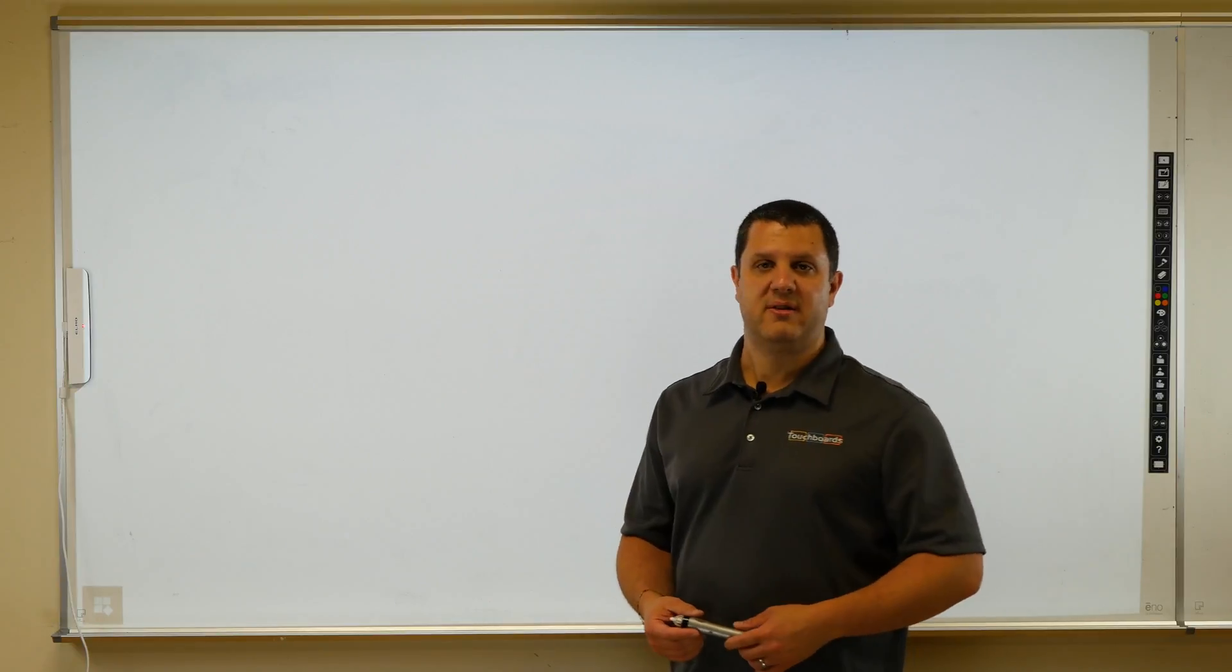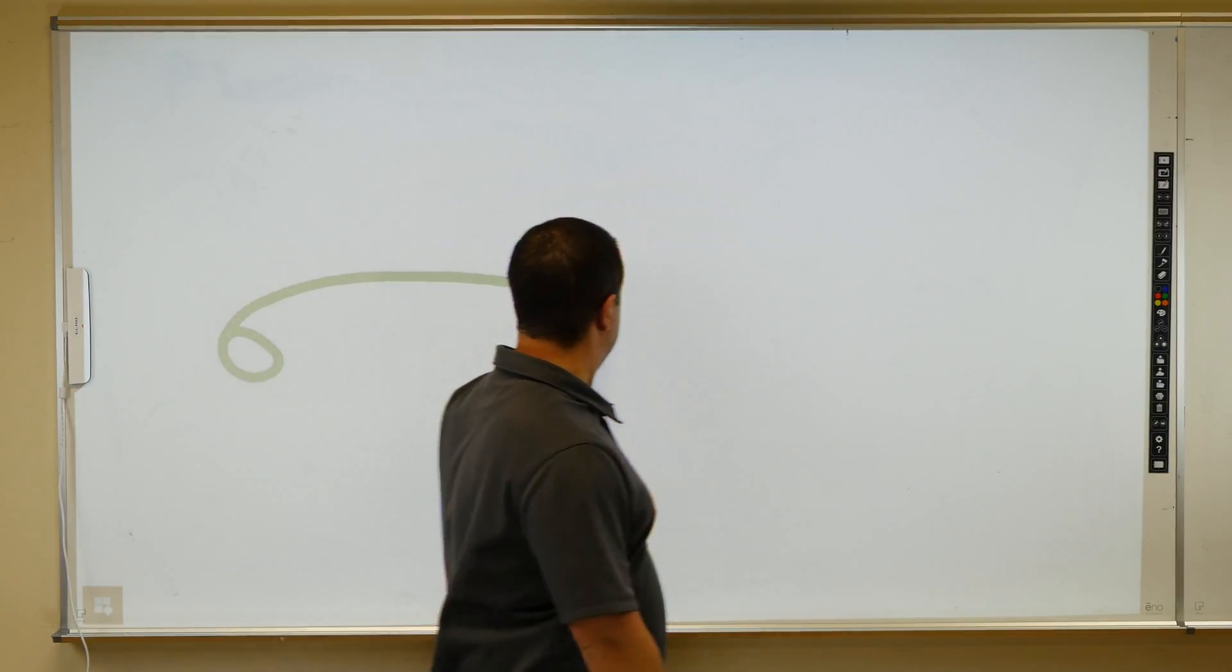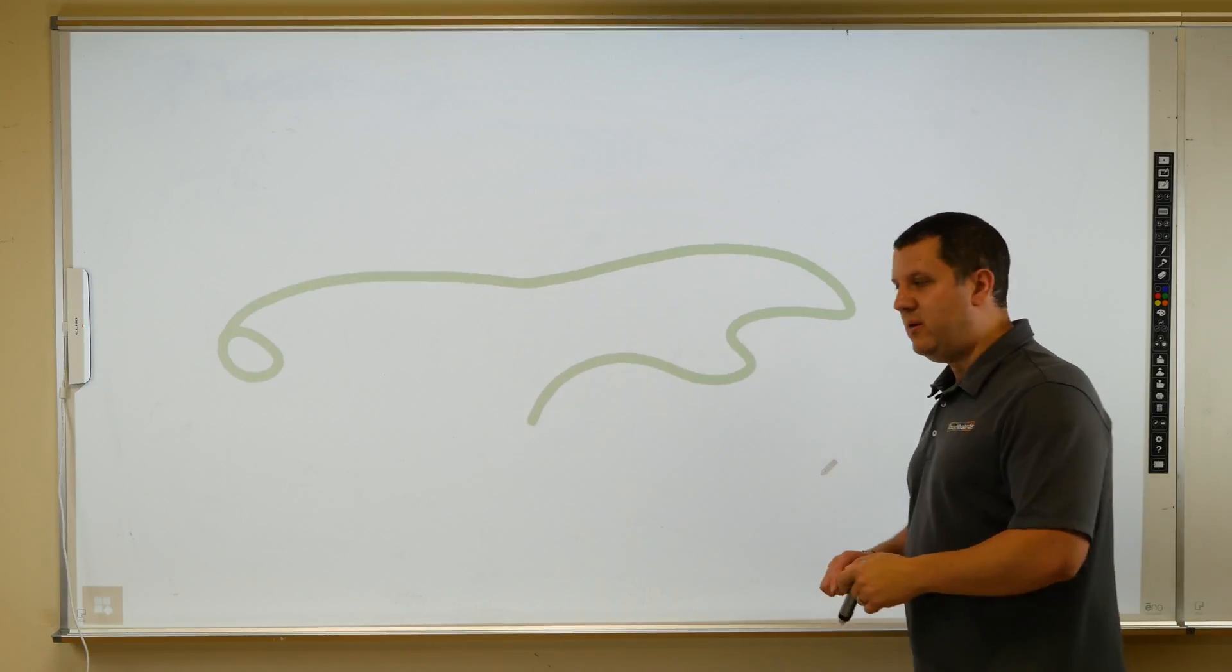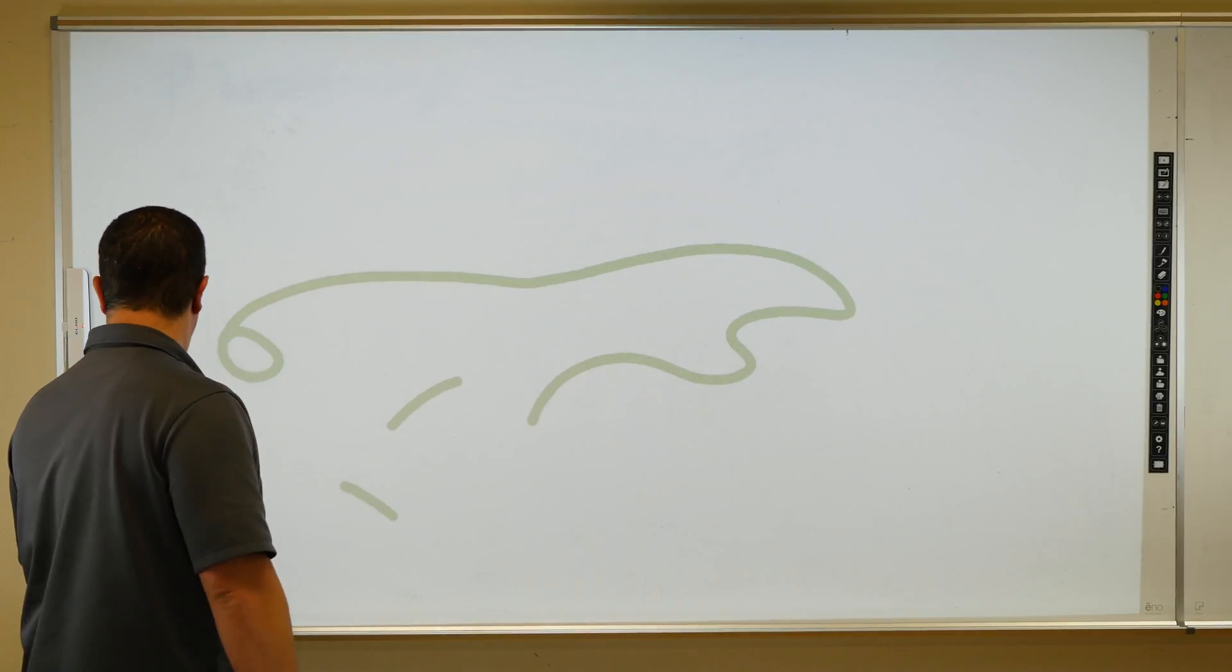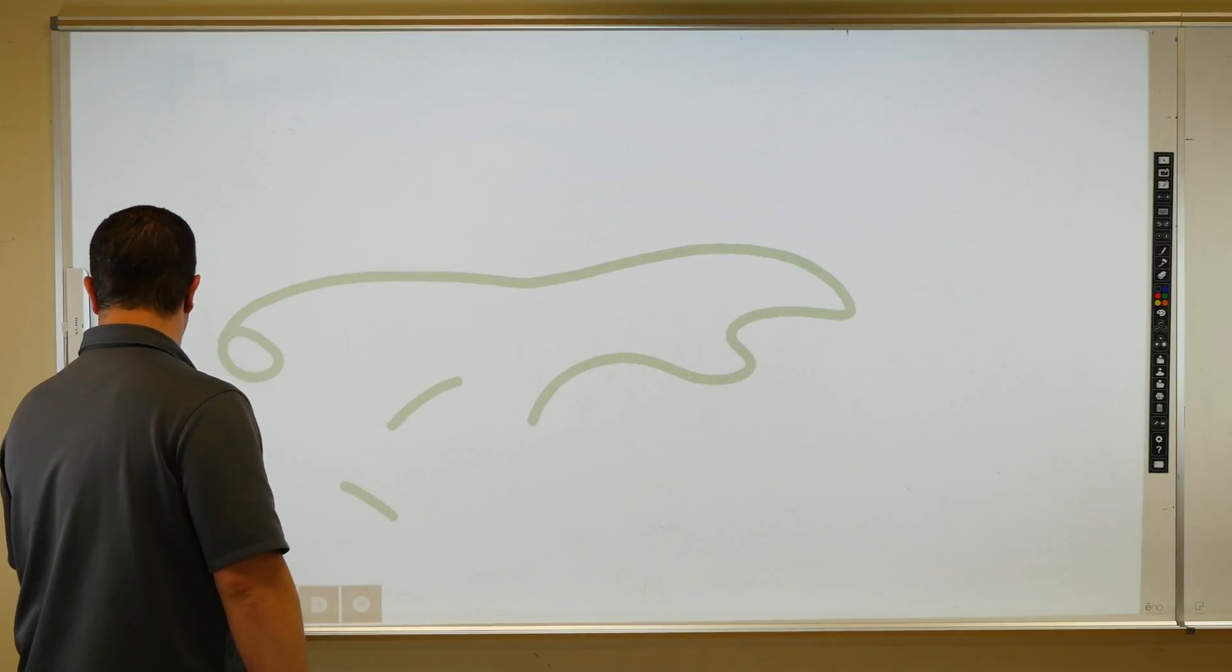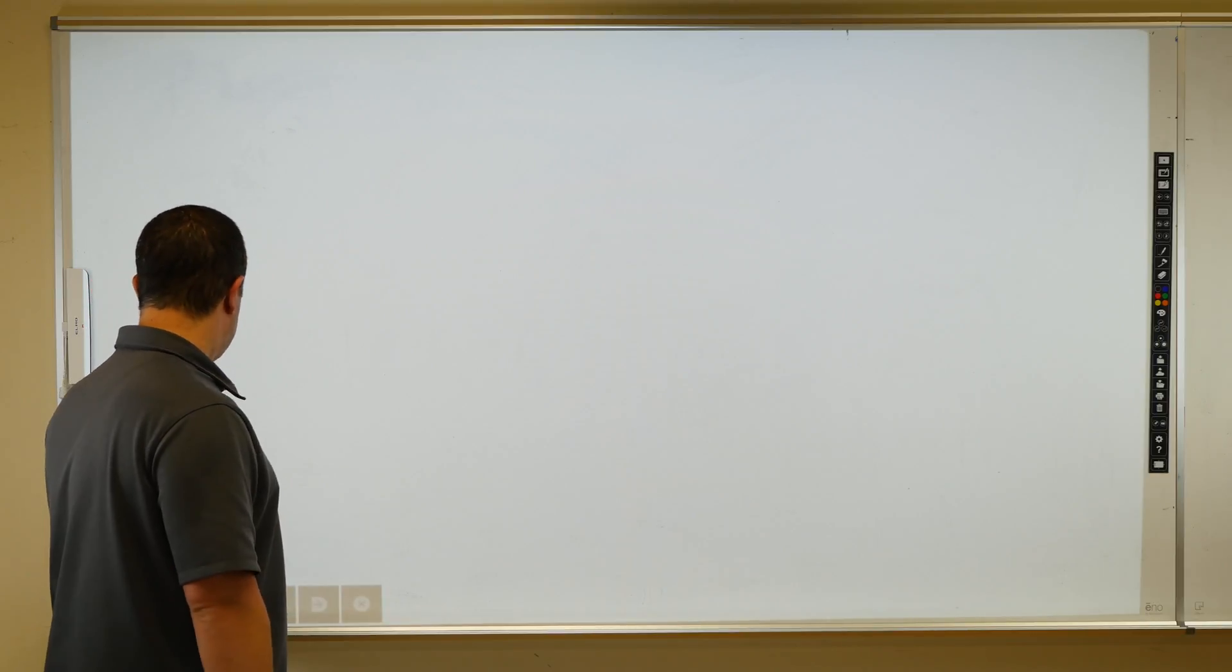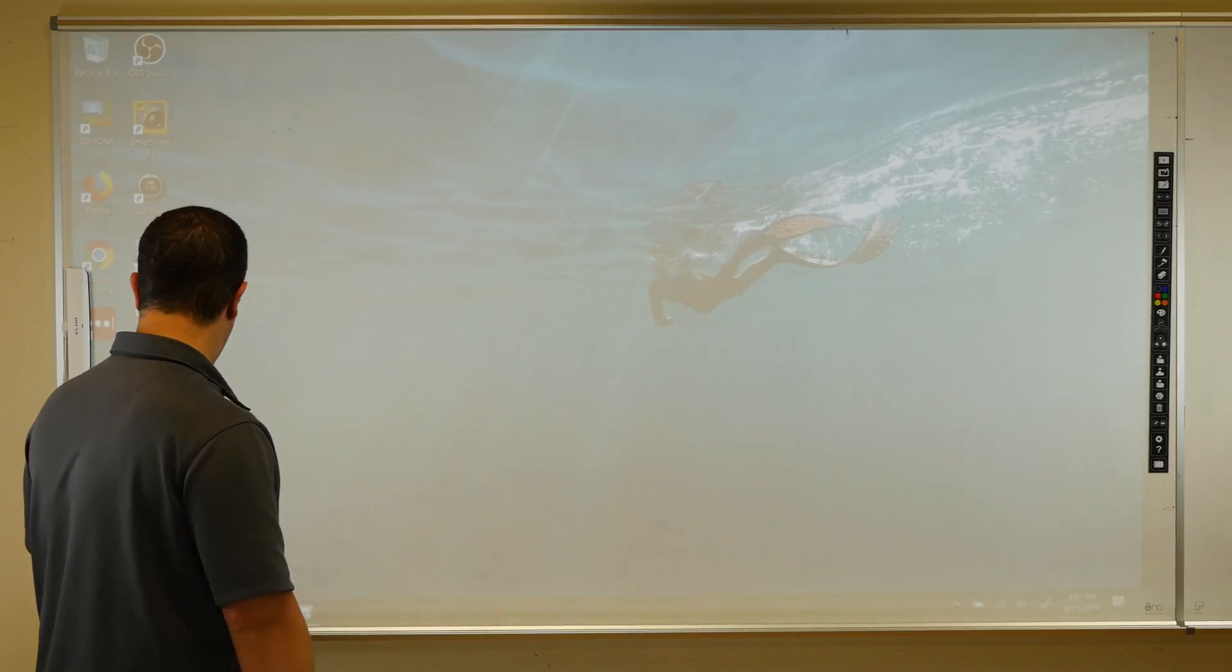This is it. Just a blank screen that you can draw on. I can draw all over the screen. I can erase. I can change colors. Basically do whatever I want to do. Clear it. I can go back to my desktop. So I can go back to my computer control. I can go back to the Elmo software.